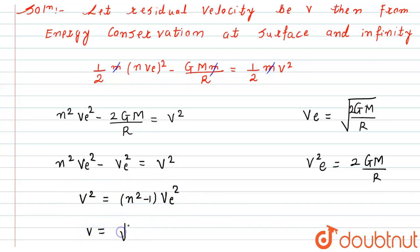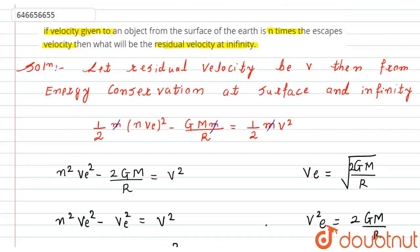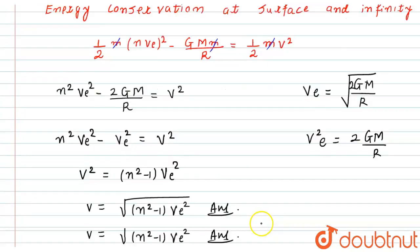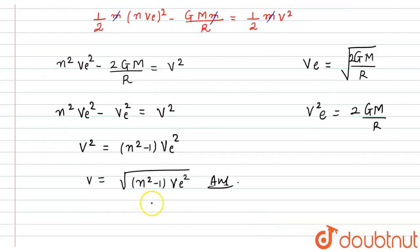Therefore, v equals the square root of (n² − 1) times vₑ². This is our required answer — the residual velocity at infinity for that object is v = √(n² − 1) × vₑ. I hope you liked it, thank you.